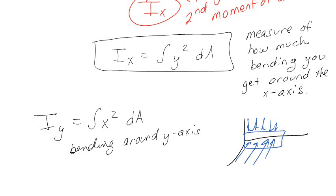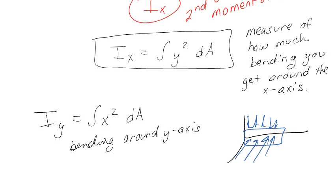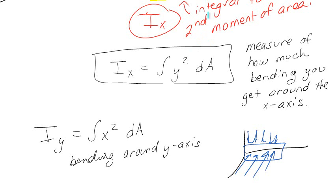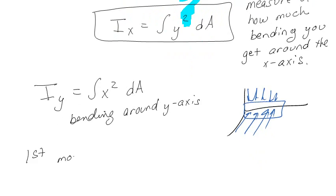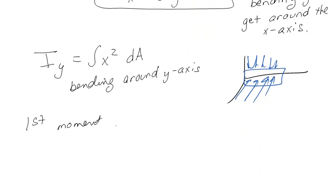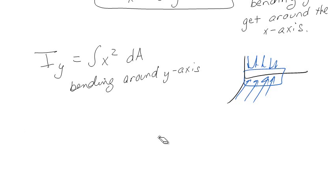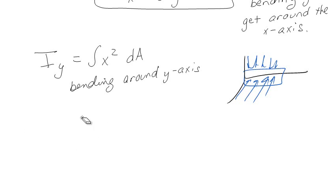Now I told you a while ago that I was going to show you why we call this the 'second moment.' The reason is actually because of that Y-squared — there's a '2' in the exponent. There is also a first moment of area, which would look like the same integral but without the square. And you also have a third moment, which would be Y-cubed. So it's called the second moment because Y-squared is in the integrand.